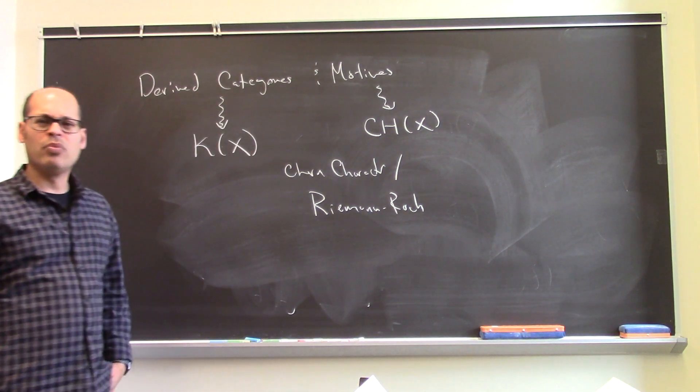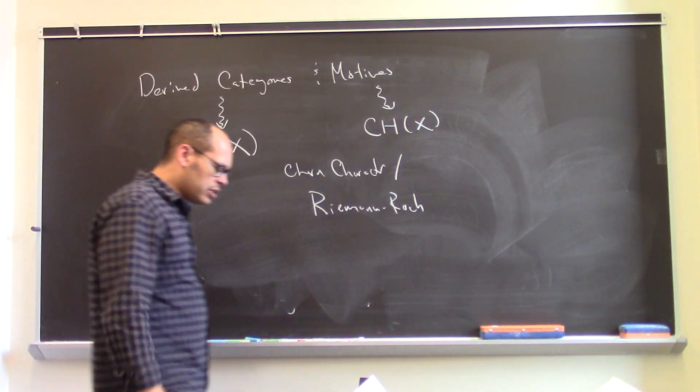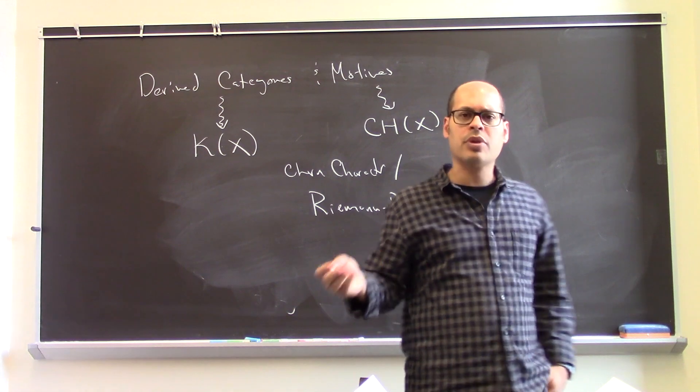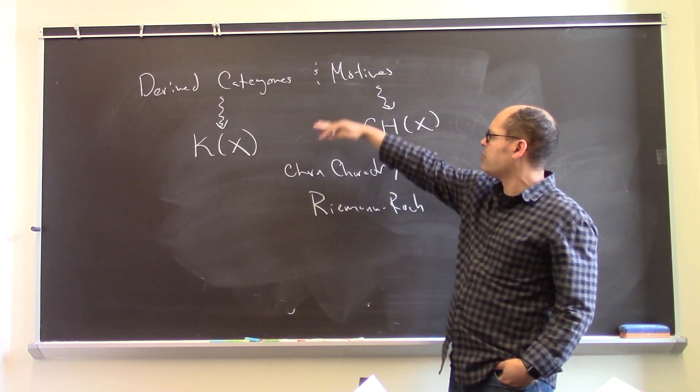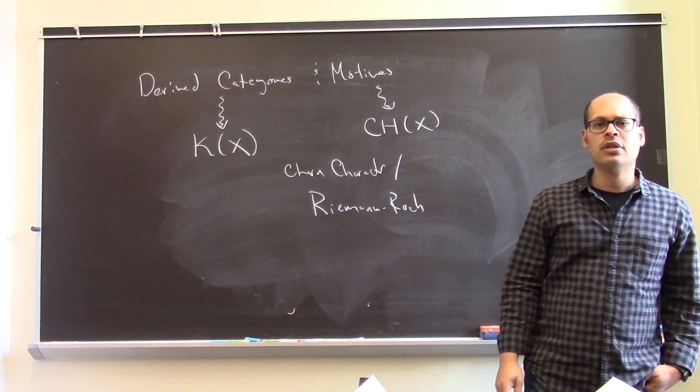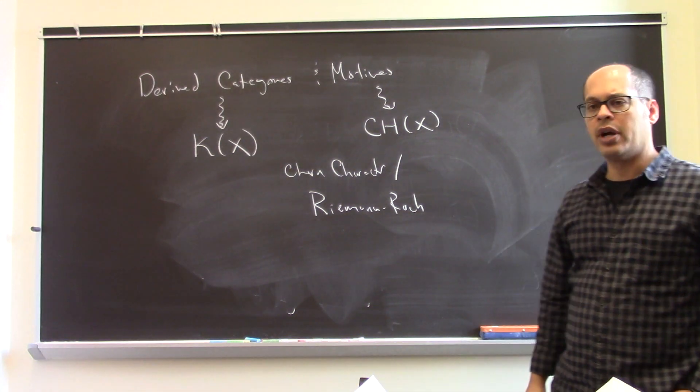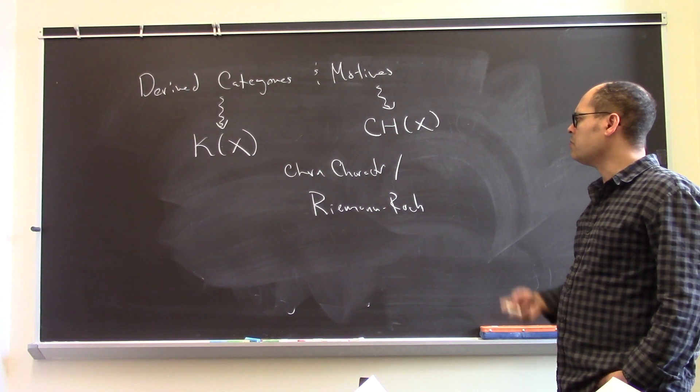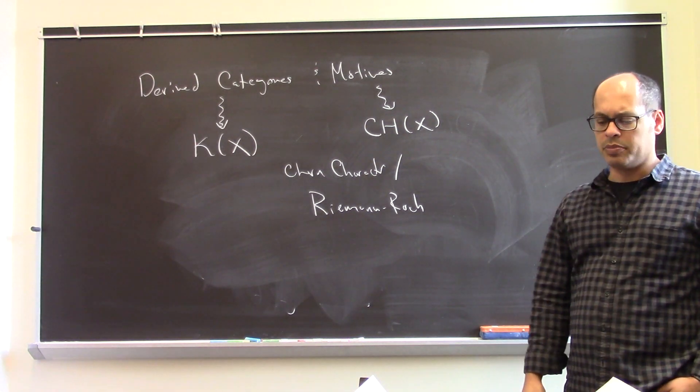And so it's kind of natural to ask, does this relationship kind of get souped up to a relationship between the derived categories and motives for varieties? And to what extent can we push this?